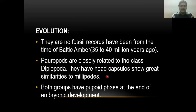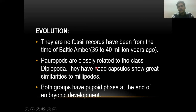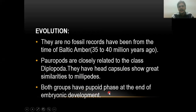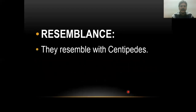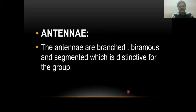From an evolutionary point of view, there is no proper fossil record. However, some fossils are found in amber form — amber being a type of fossil — dating back to about 32 to 40 million years ago. Their capsular structure completely resembles millipedes or diplopods, showing resemblance in head structure, branched antennae, segmented antenna, and body structures.